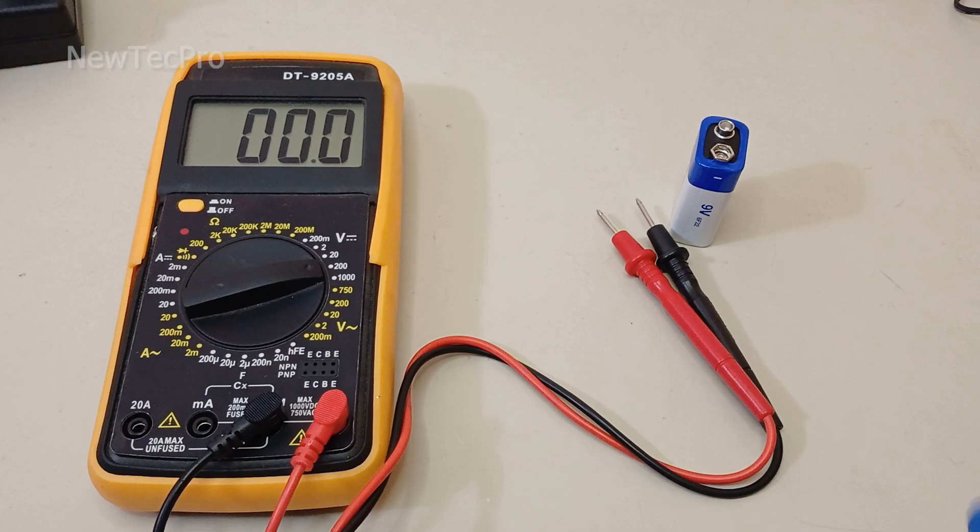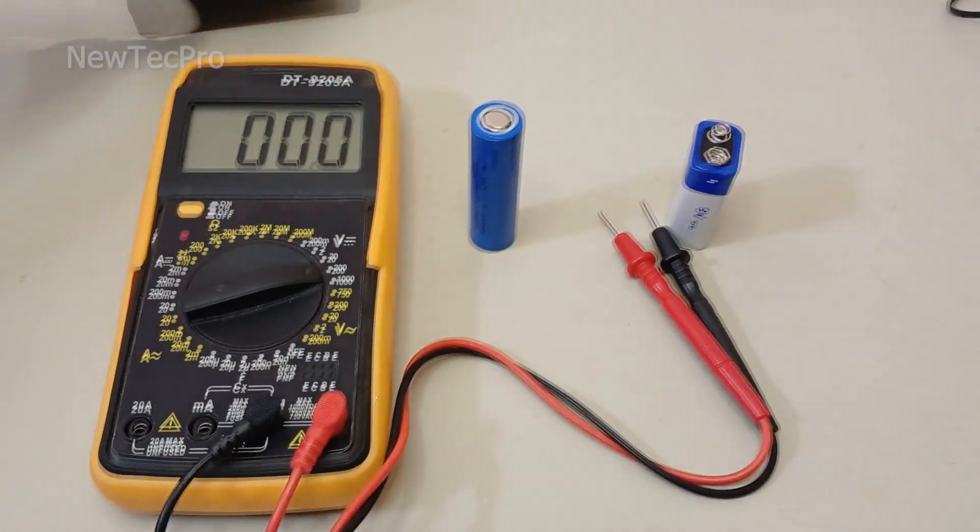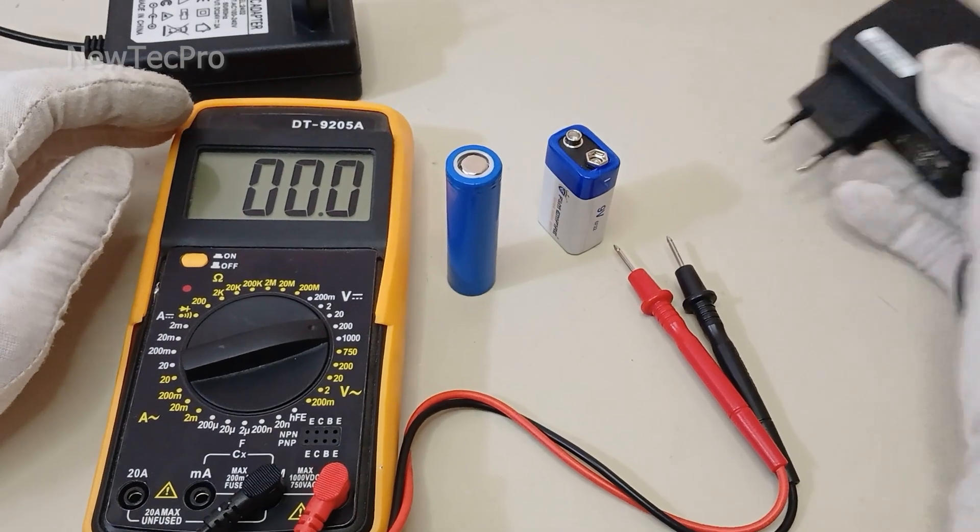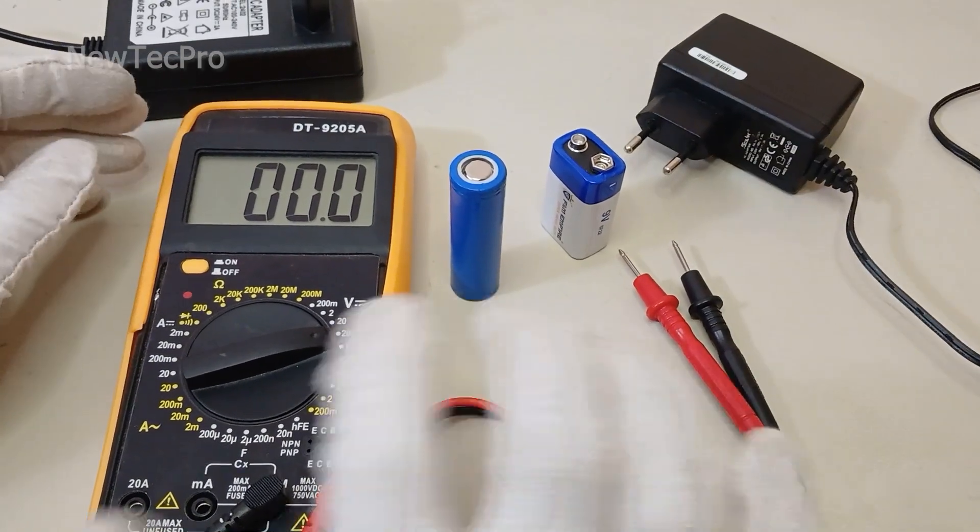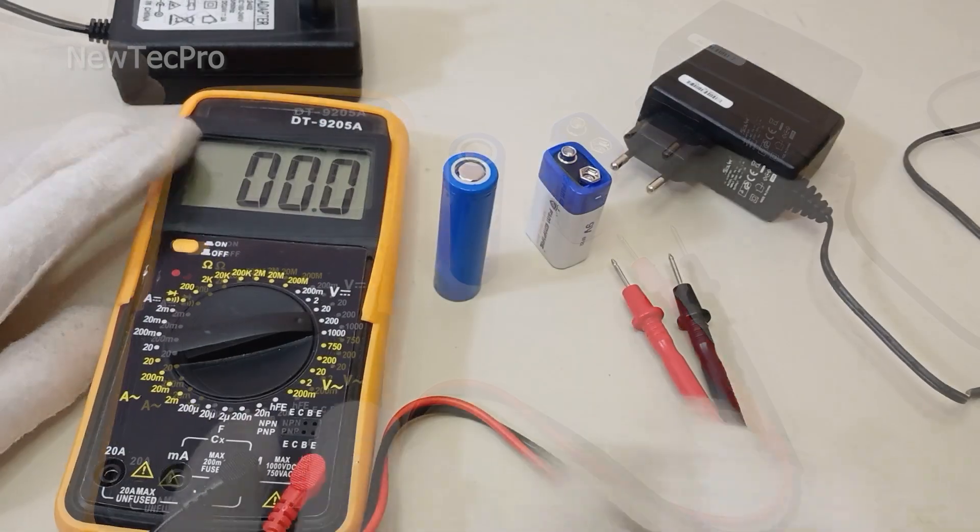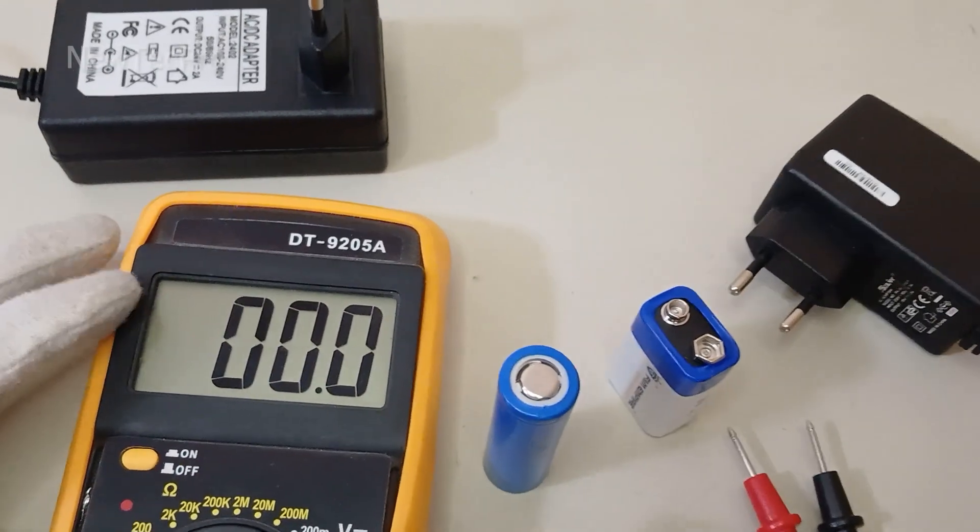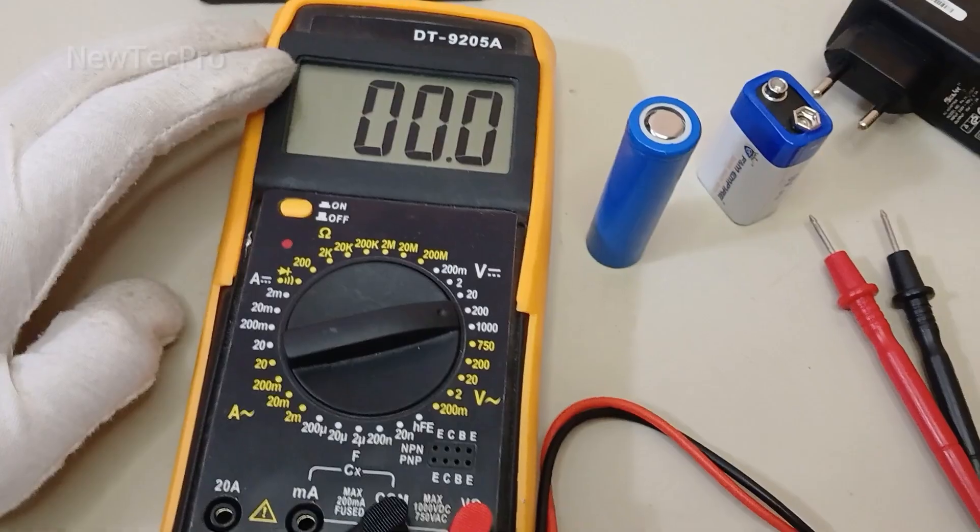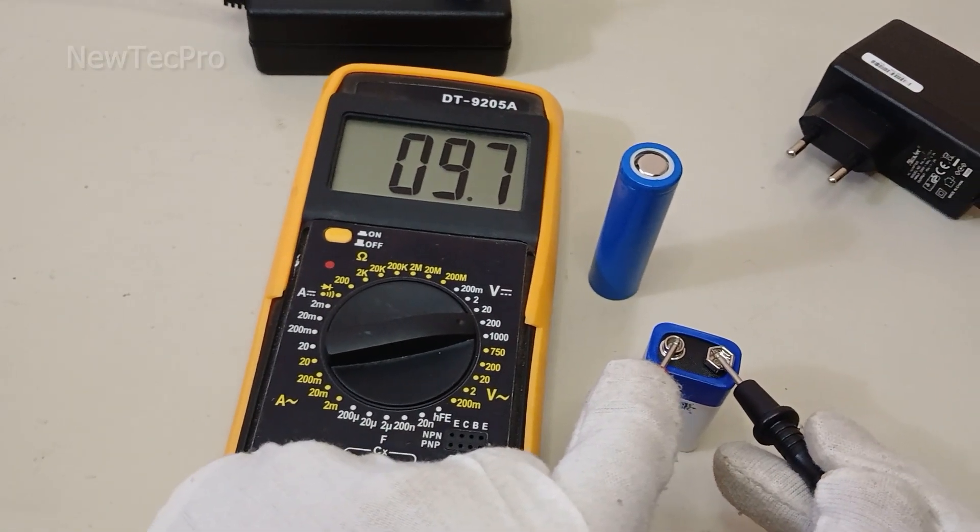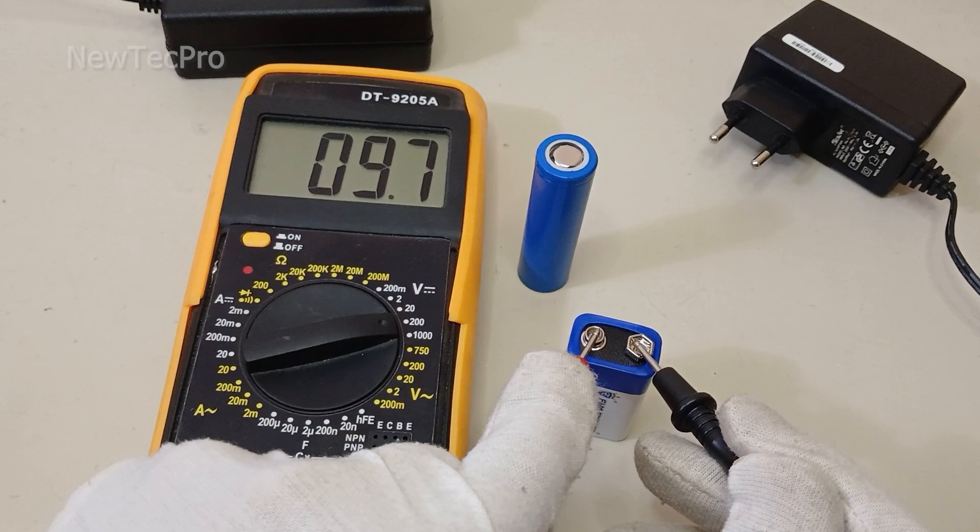Okay my friends, to summarize the key points: that's it, you've successfully measured DC voltage with your multimeter. Remember to always double-check your settings and connections to ensure accurate readings.